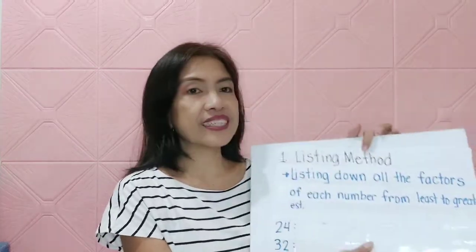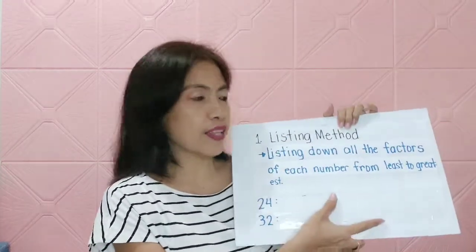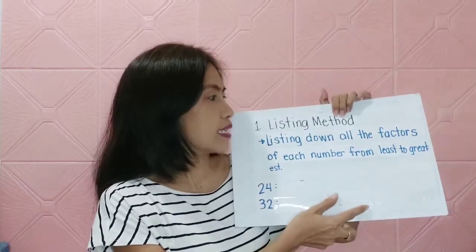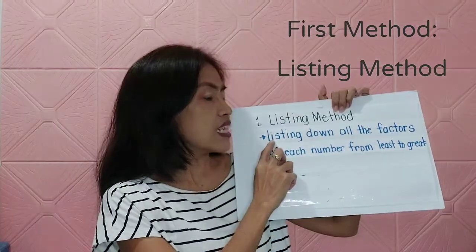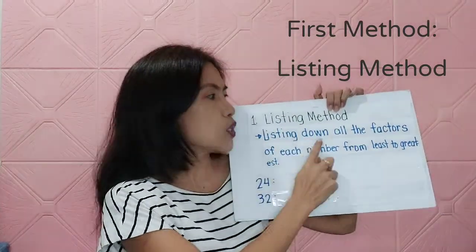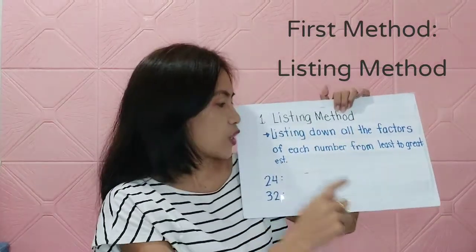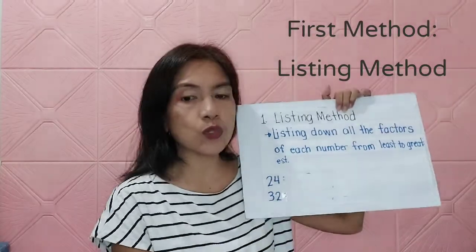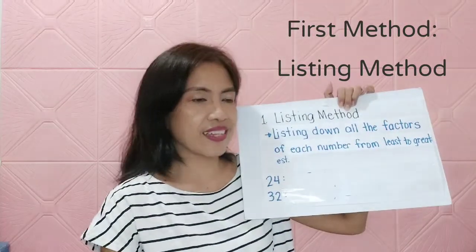We have several ways on how to get the GCF. The first one is the listing method, or making-a-list method. It is listing down all the factors of each number from least to greatest.